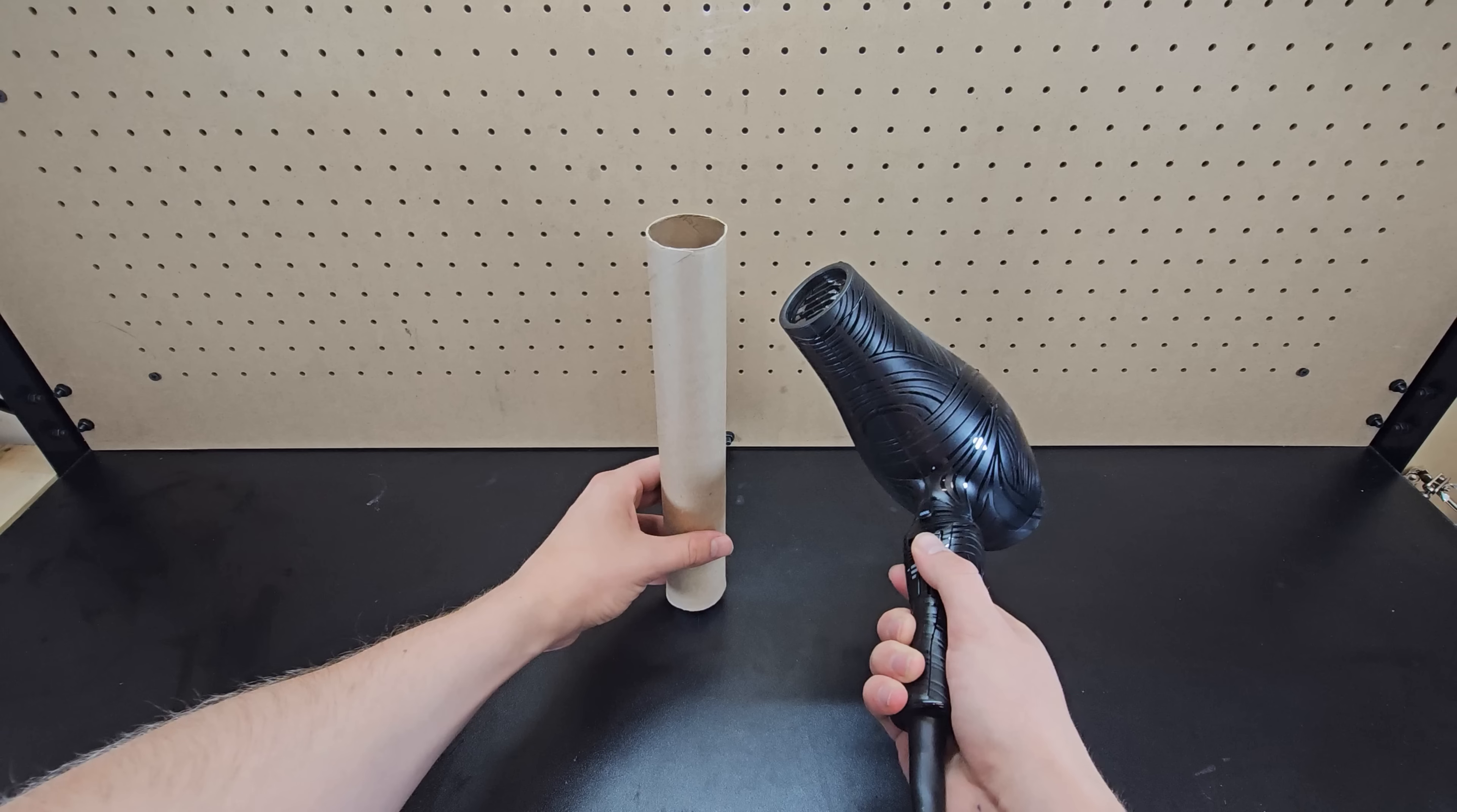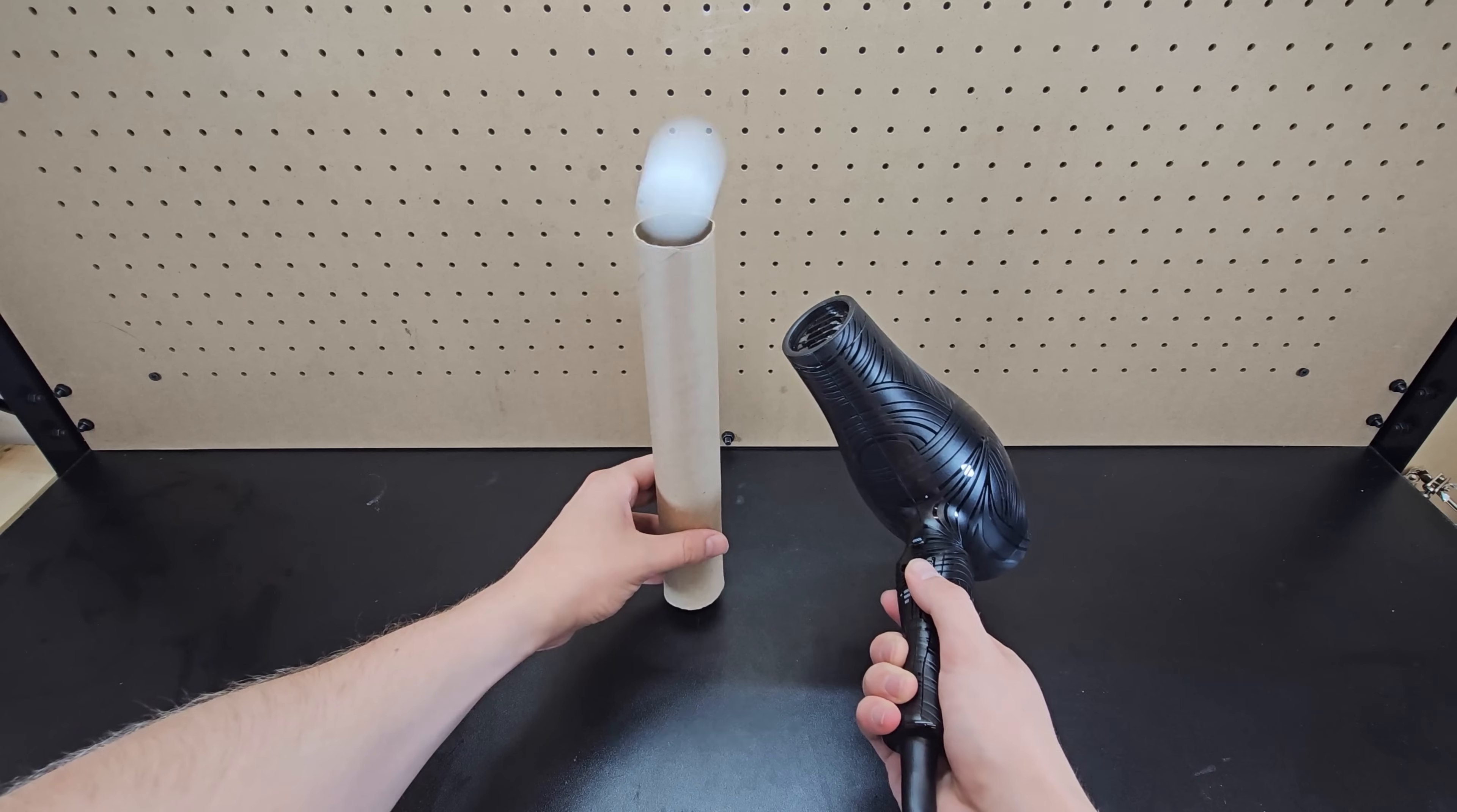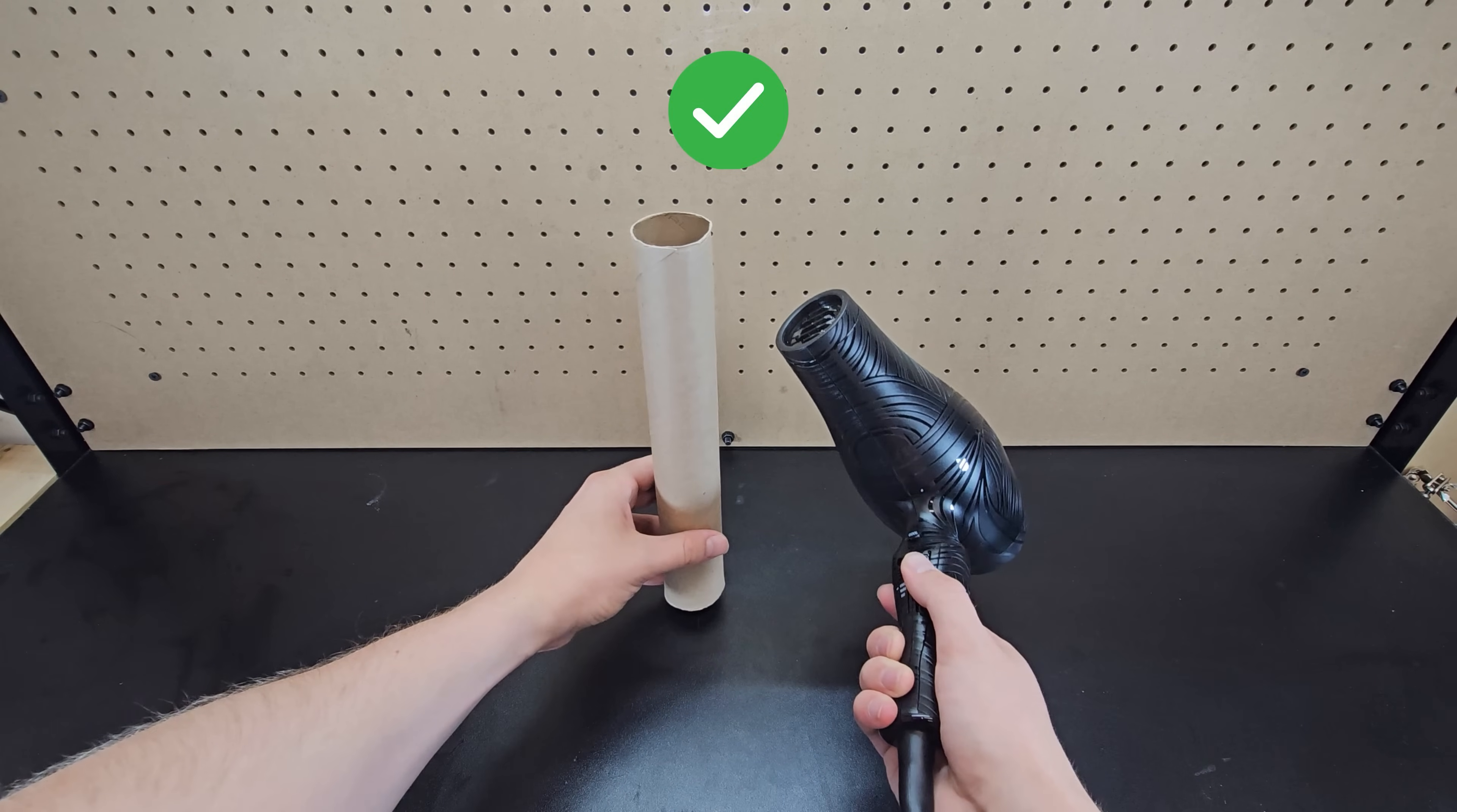Aiming a hair dryer like this at a cardboard paper towel roll with a ping pong ball in it does cause the ping pong ball to fly out.